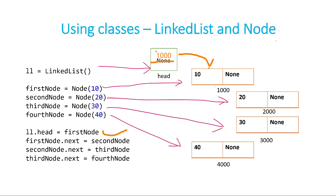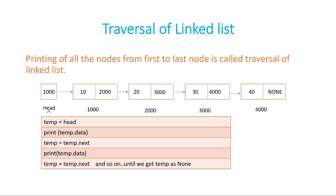Now head is pointing to the first node at address 1000. The next line, first_node.next = second_node, stores 2000 in first_node's next field, so it now points to 2000. Then second_node.next = third_node stores 3000, and similarly 4000 goes into third_node.next. So that's how you have created a linked list: first you created four nodes, then you chained them all together to form a linked list.